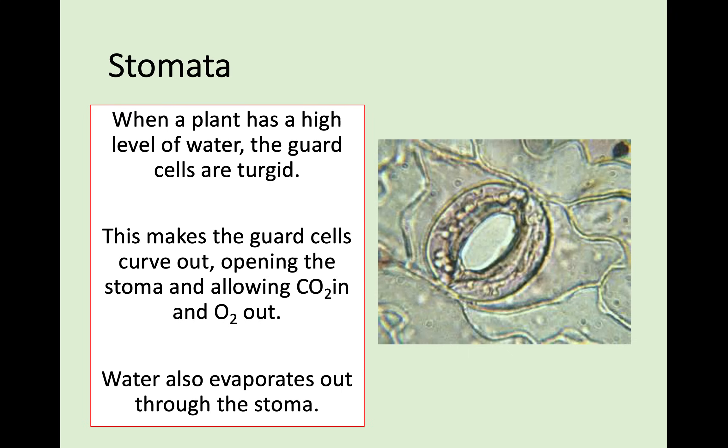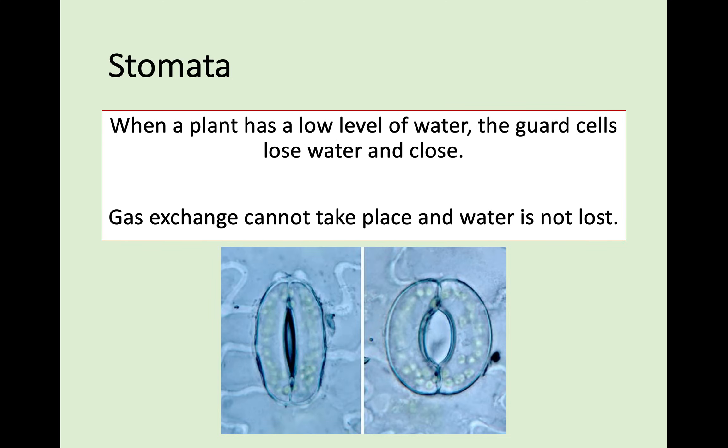Water also evaporates out through an open stomata. If you have a high level of water, it doesn't matter that water's moving out - that's totally fine. However, when a plant has a low level of water, these guard cells lose water, they're no longer turgid, and they close. Once closed, there is no gap anymore and gas exchange and water exchange cannot take place. This is important - if your plant has a low level of water, the last thing it wants is to let more water out, so you close the stomata to make sure nothing is lost.